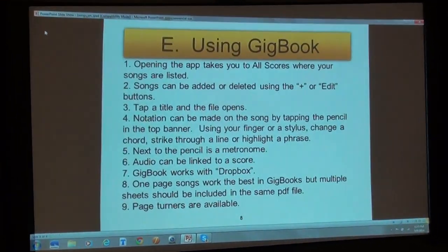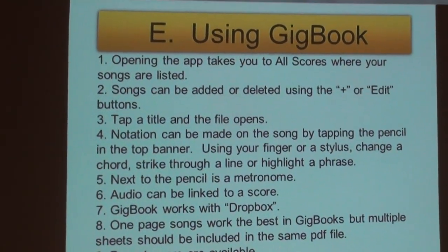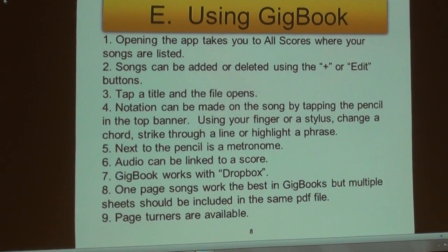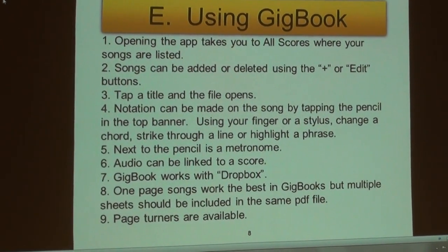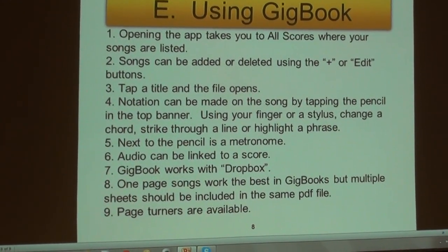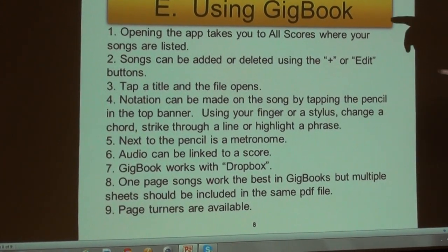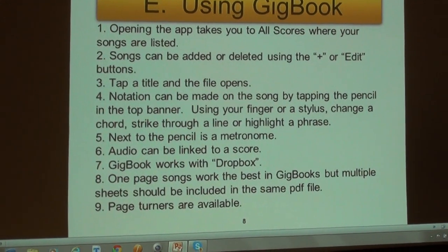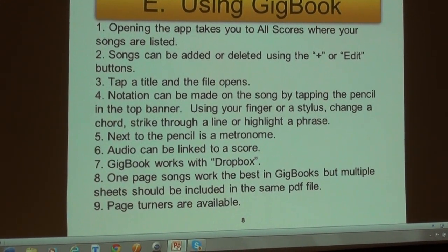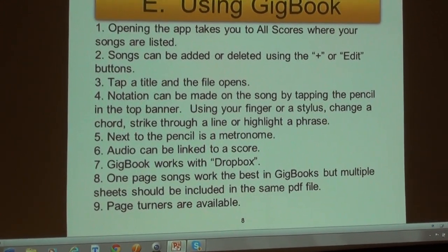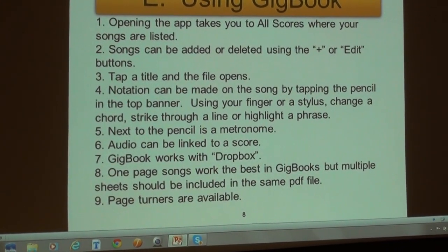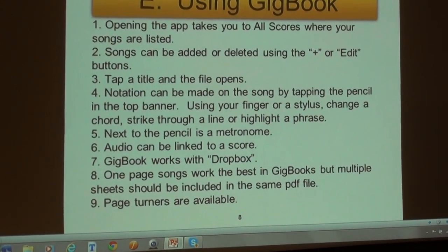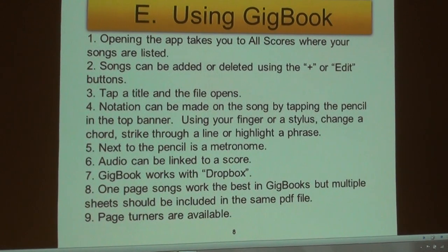Opening GigBook on your iPad takes you to All Scores where your songs are listed in alphabetical order. You can add, subtract, or edit songs in GigBook. Just tap on the title and the file opens. If you want to make notation on the song, there'll be a banner at the top with a pencil icon. Tap on that and you can highlight parts of the music or write on the iPad with your finger or a stylus to change a note, chord, or whatever. There's also a metronome in there that you can use.